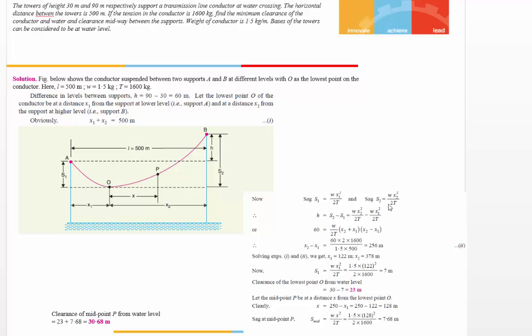Now, the difference in height h = s2 - s1 = (w*x2²/2T) - (w*x1²/2T). We know the height is 30 meters here and the height is 90 meters there. The difference in height is 90 - 30 = 60 meters.